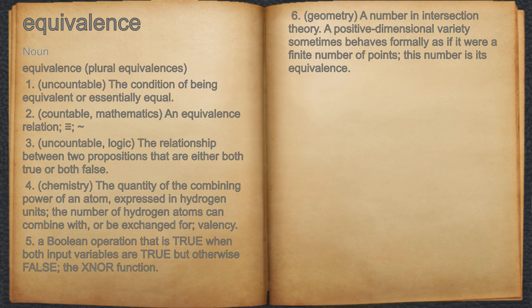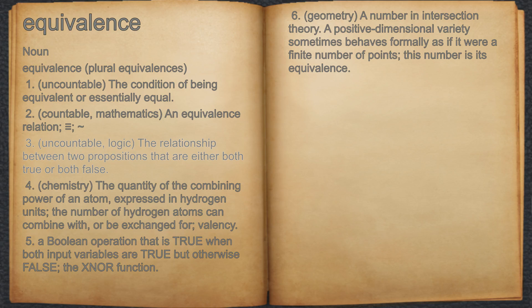Equivalence. Noun. 1. Uncountable: The condition of being equivalent or essentially equal. 2. Countable, Mathematics: An equivalence relation.